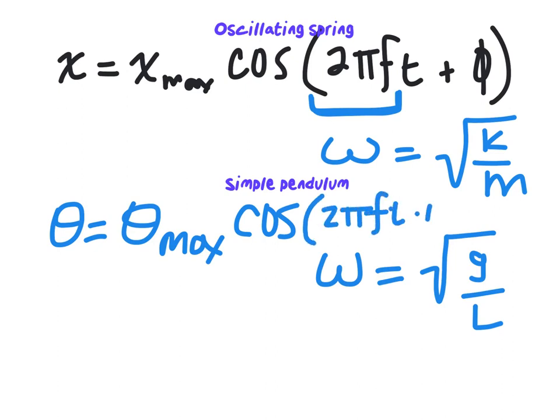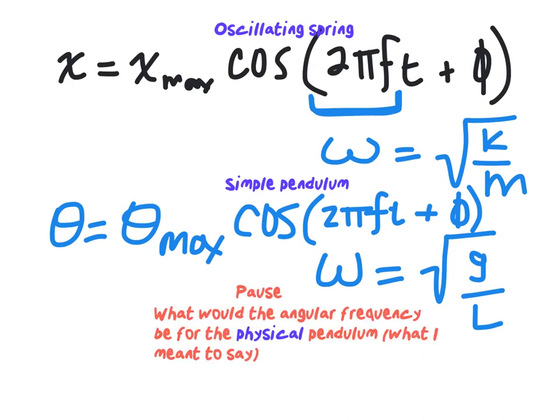The position function looks very similar. Pause the video and think about what the angular frequency would be for the simple pendulum — try to mimic it, maybe starting from the differential equation, or see if you can spot it directly. Let's start with the differential equation, doing the simple pendulum on the left and the physical pendulum on the right, and see what the period equation comes out to be.